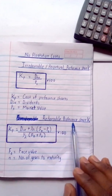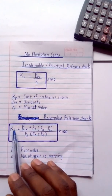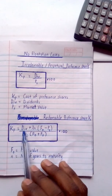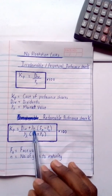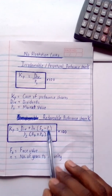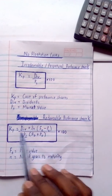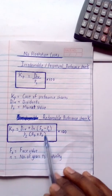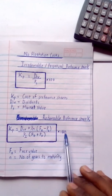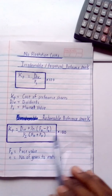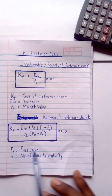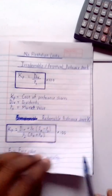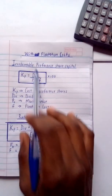For redeemable preference share capital with no flotation costs, the formula is: Kp = { [Div + (1/n)(F₀ − P₀)] / [½(F₀ + P₀)] } × 100, where F₀ is the face value (redemption value) and n is the number of years to maturity.